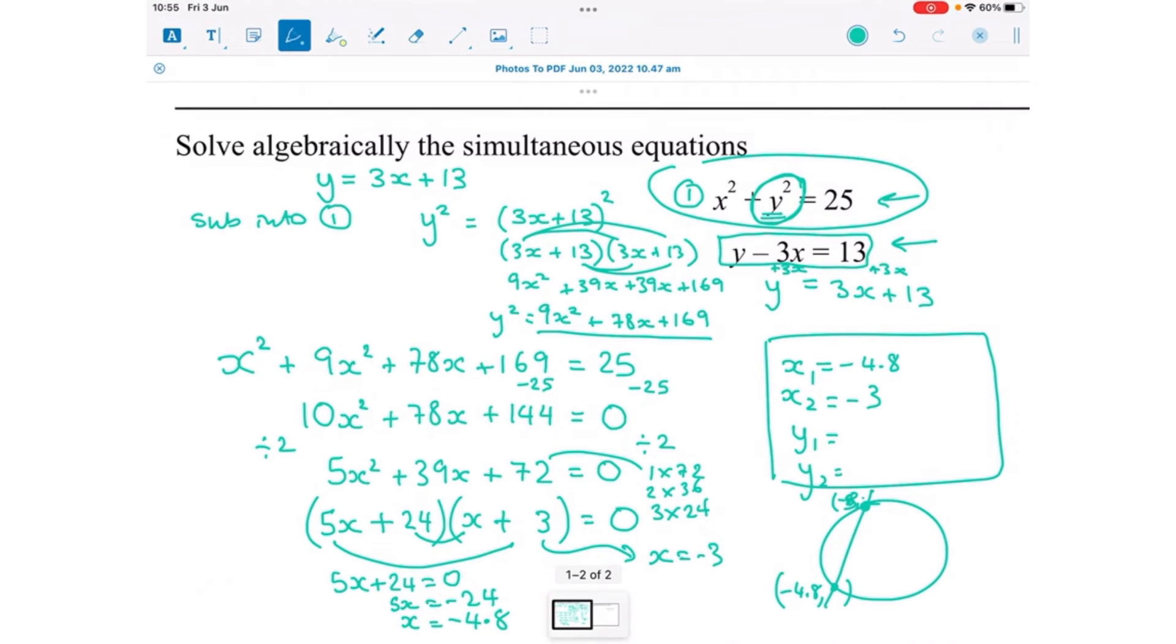So the y coordinate we can get, the easiest way to get it is to use this equation here. y is 3 lots of x add 13. So 3 lots of minus 4.8, minus 4.8 times 3, add on 13 is minus 1.4. So these two are going together, hence the little ones. And then for the other one we're just going to do the same thing, 3 lots of minus 3, add 13 is 4. So those two go together. And that's my final answer.